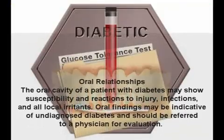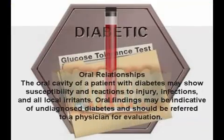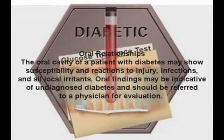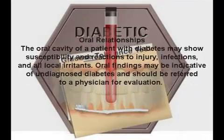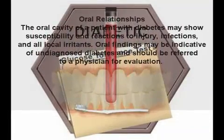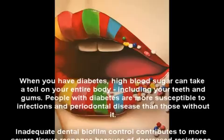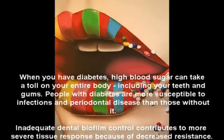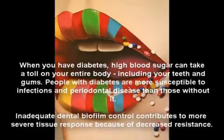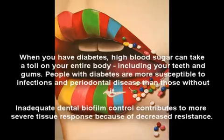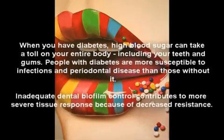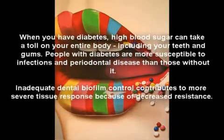The oral cavity of a patient with diabetes may show susceptibility in reactions to injury, infection, and all local irritants. Oral findings may be indicative of undiagnosed diabetes and should be referred to a physician for evaluation. When you have diabetes, high blood sugar can take a toll on your entire body, including your teeth and gums. People with diabetes are more susceptible to infections and periodontal disease than those without it.